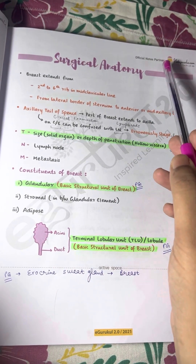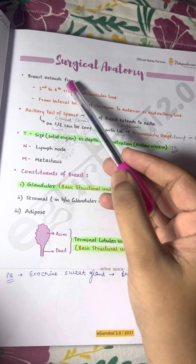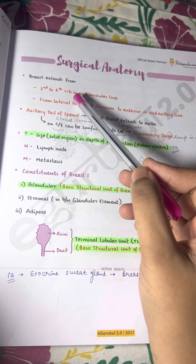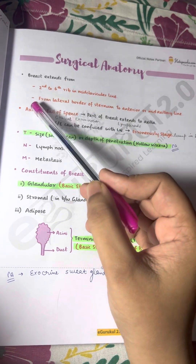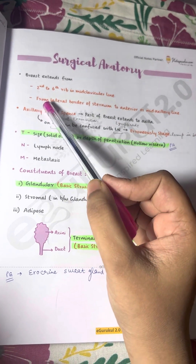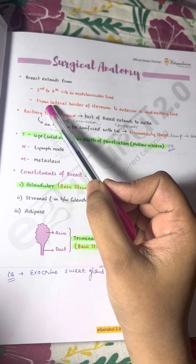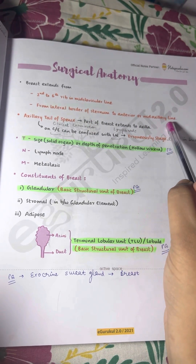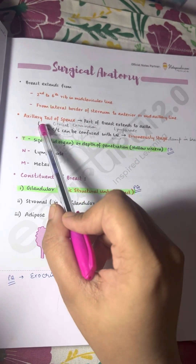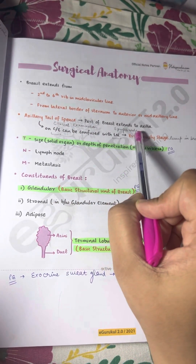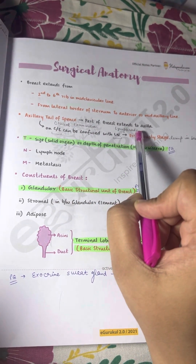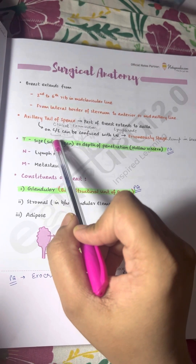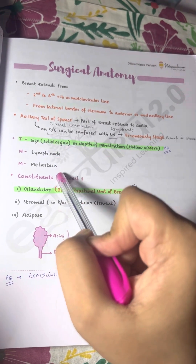In surgical anatomy, the breast extends from the 2nd to 6th rib along the mid-clavicular line vertically, and horizontally from the lateral border of the sternum to the anterior or mid-axillary line. The axillary tail of Spence is the part of the breast which extends into the axilla, and is relevant in TNM staging.